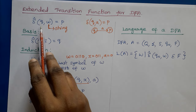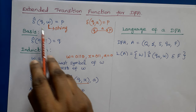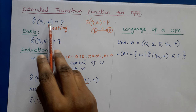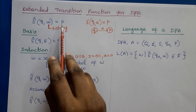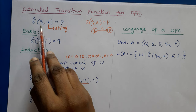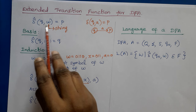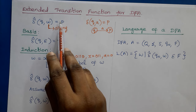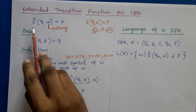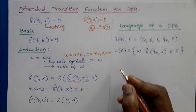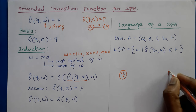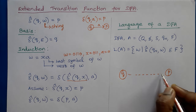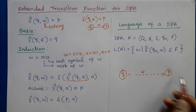Here Q is the current state and W is a string. P represents the state of the DFA after reading all symbols of W. So starting from current state Q, after reading all input symbols of W, we will be in state P — that is represented by the extended transition function, going from Q to P by following the number of input symbols.